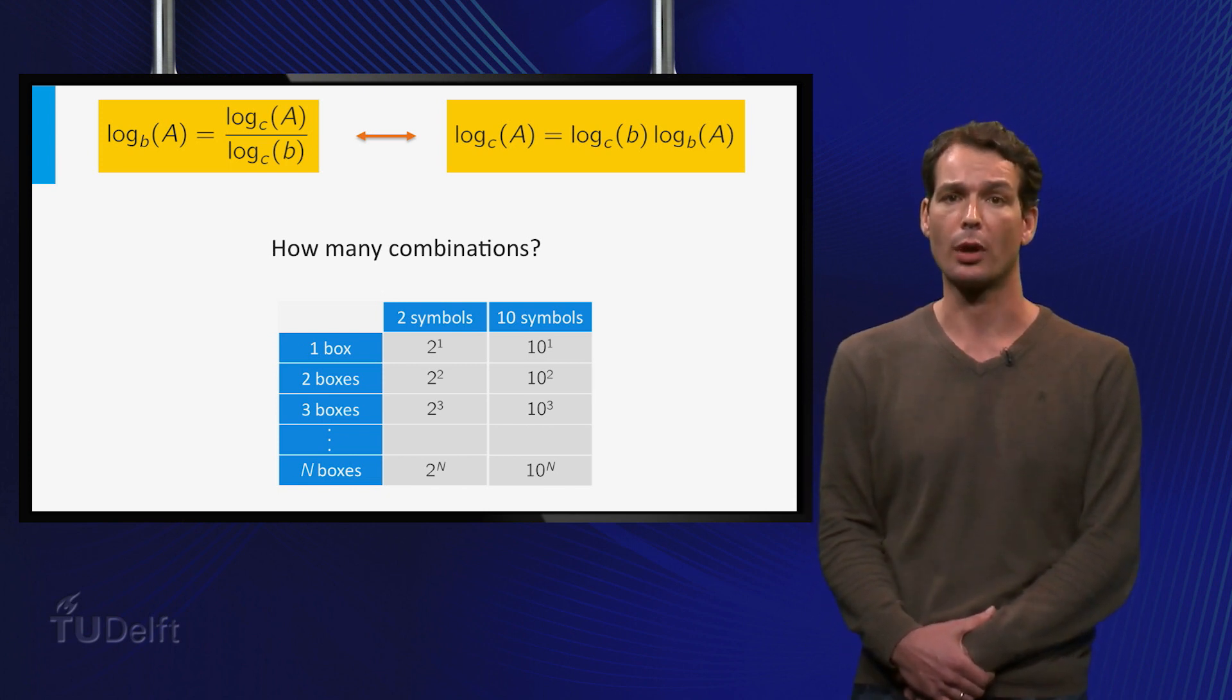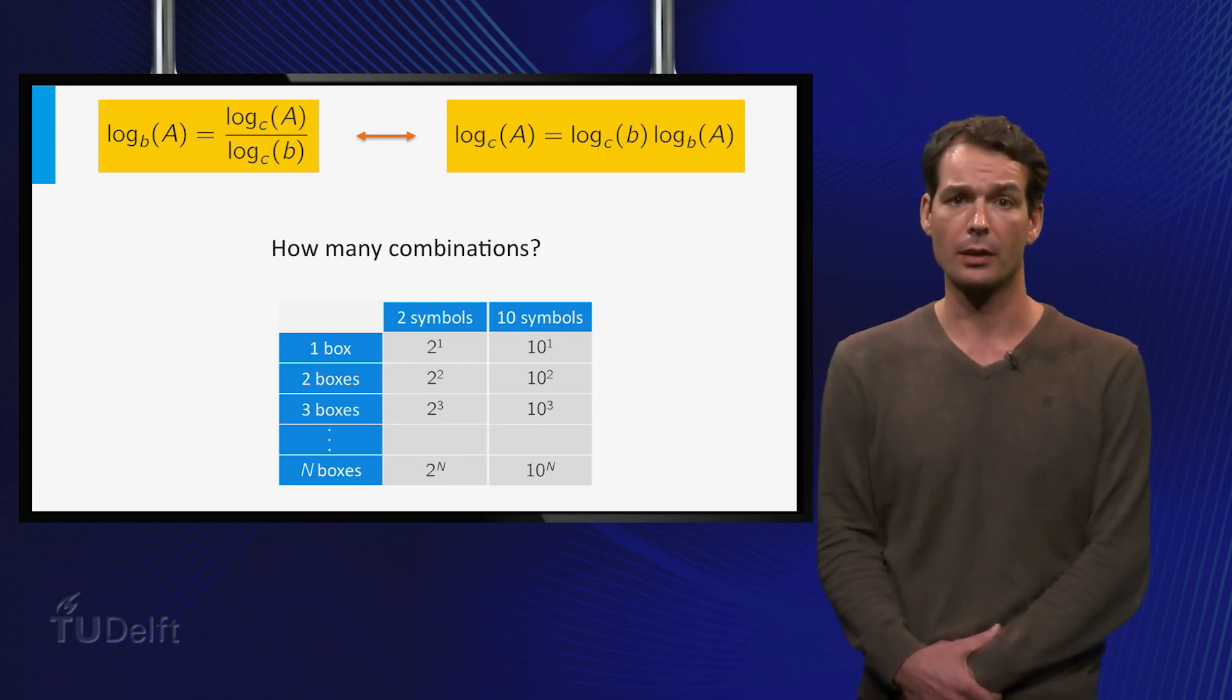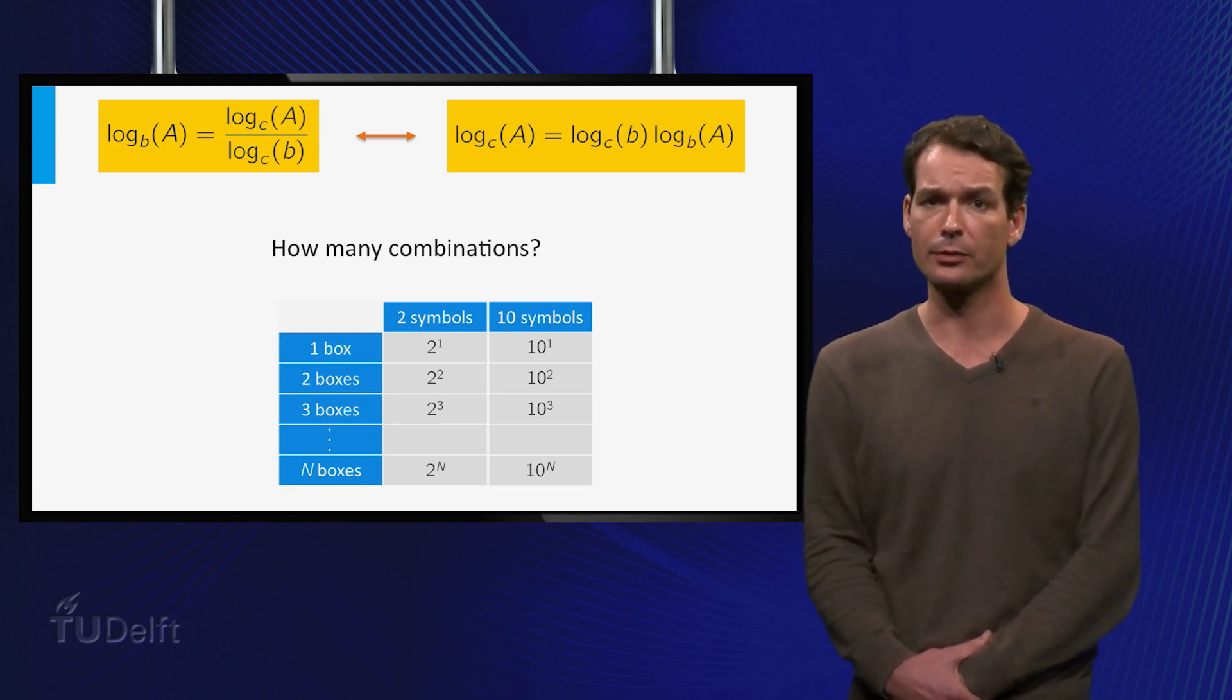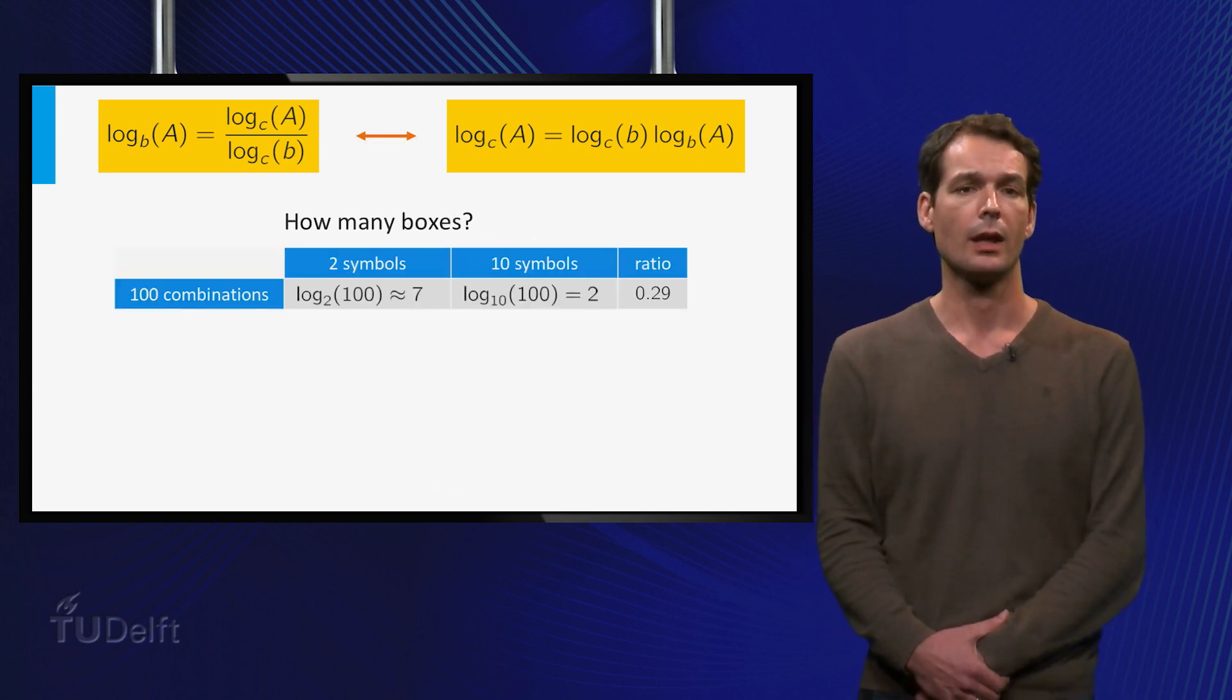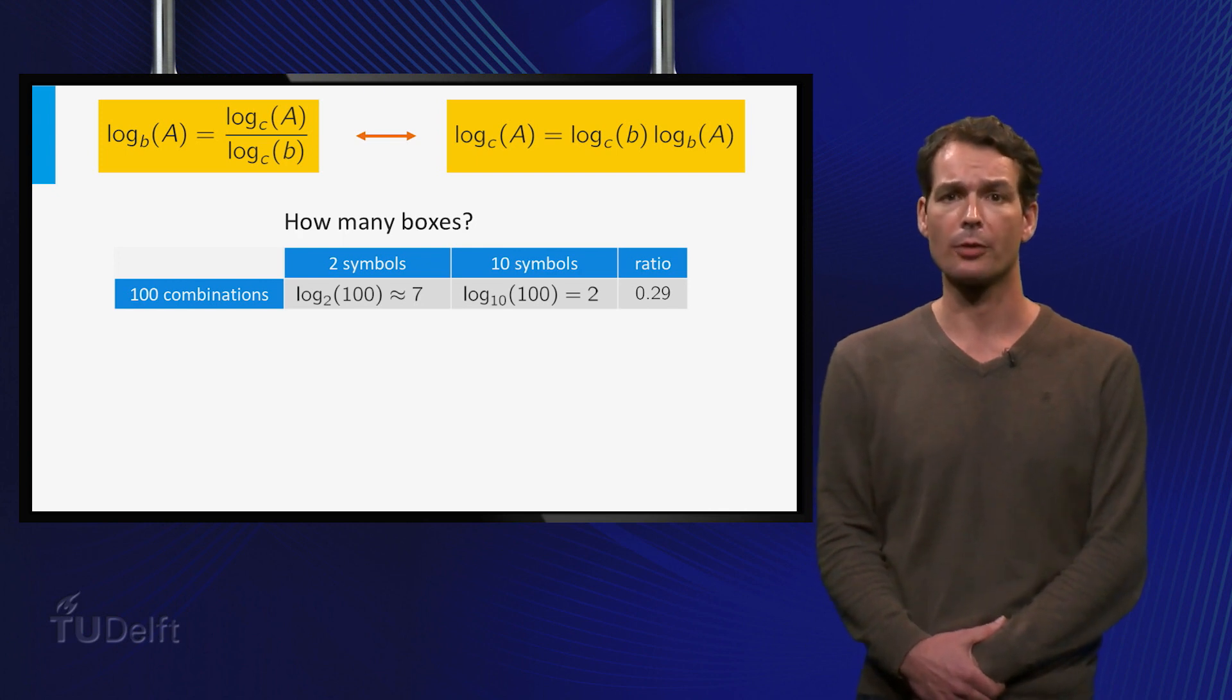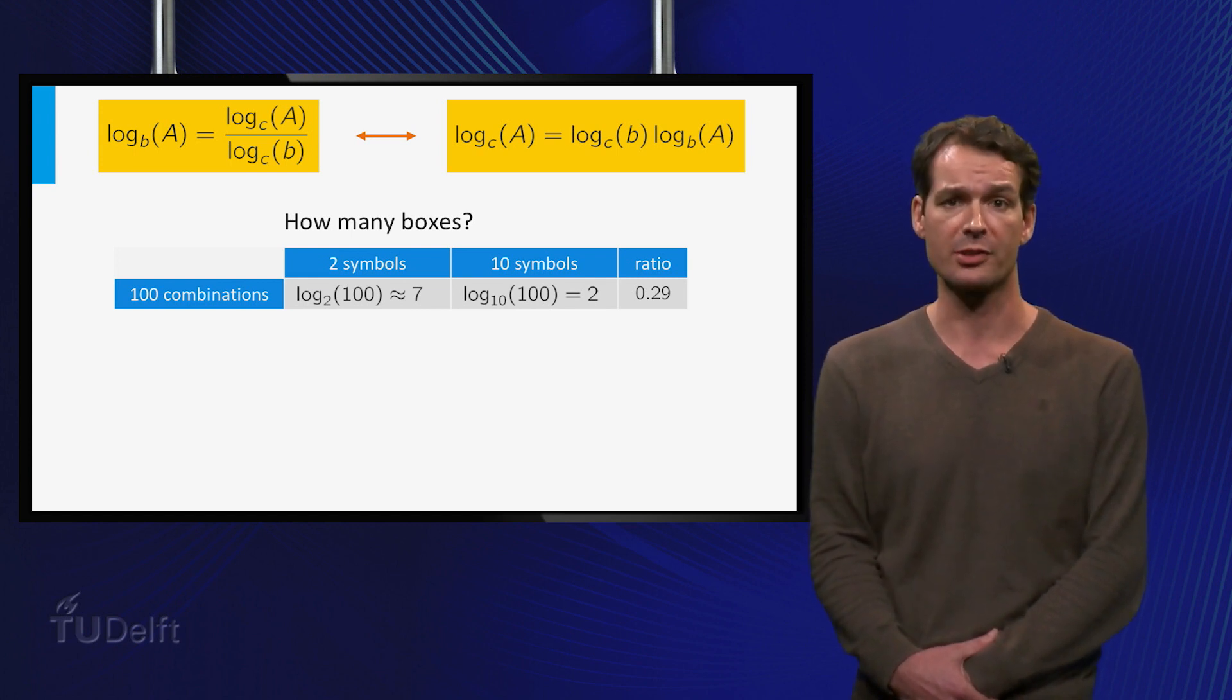Well if we have one box, we can of course make 10 combinations. With 2 boxes we can make 100 combinations and in general with N boxes we can make 10 to the power N combinations. Let's compare this to the number of combinations with just zeros and ones. Suppose we want to make 100 combinations. In base 10 we need 2 boxes and in base 2 we need 7 boxes since 2 to the power 7 is the smallest power of 2 larger than 100. This differs by a factor 2 over 7 which is 0.29.